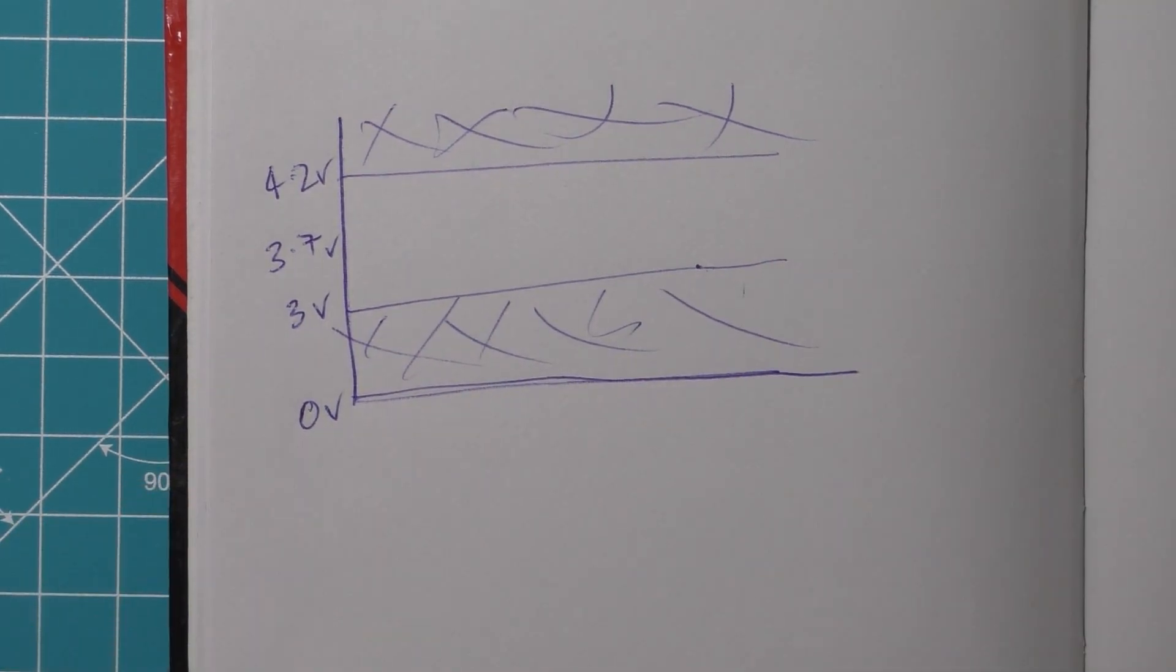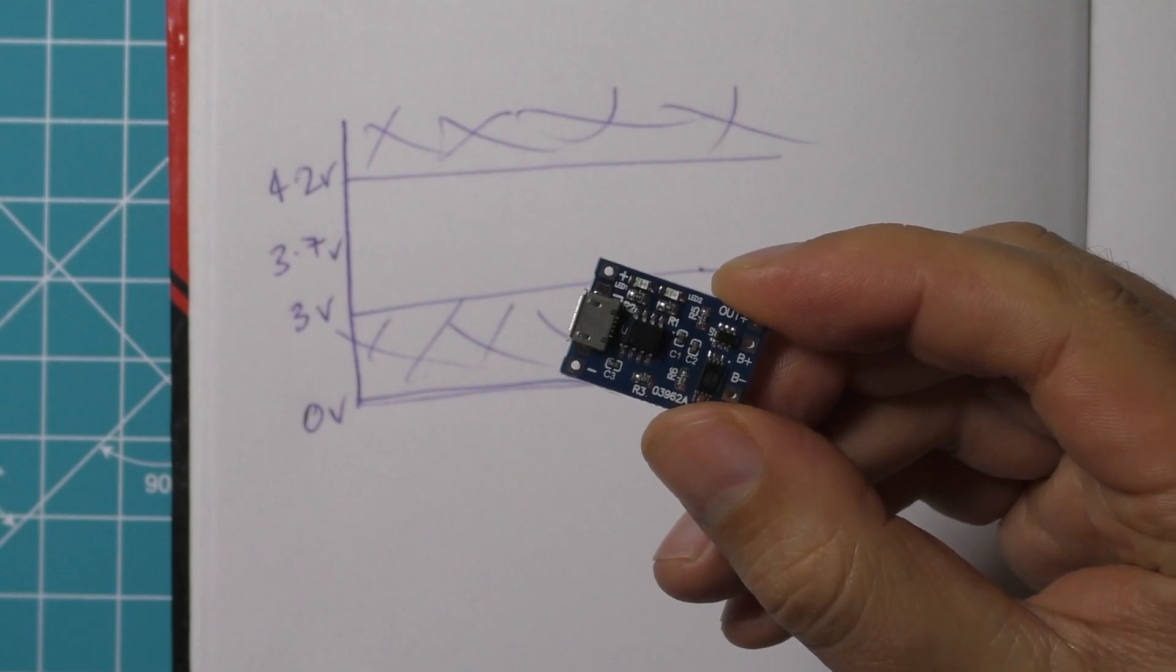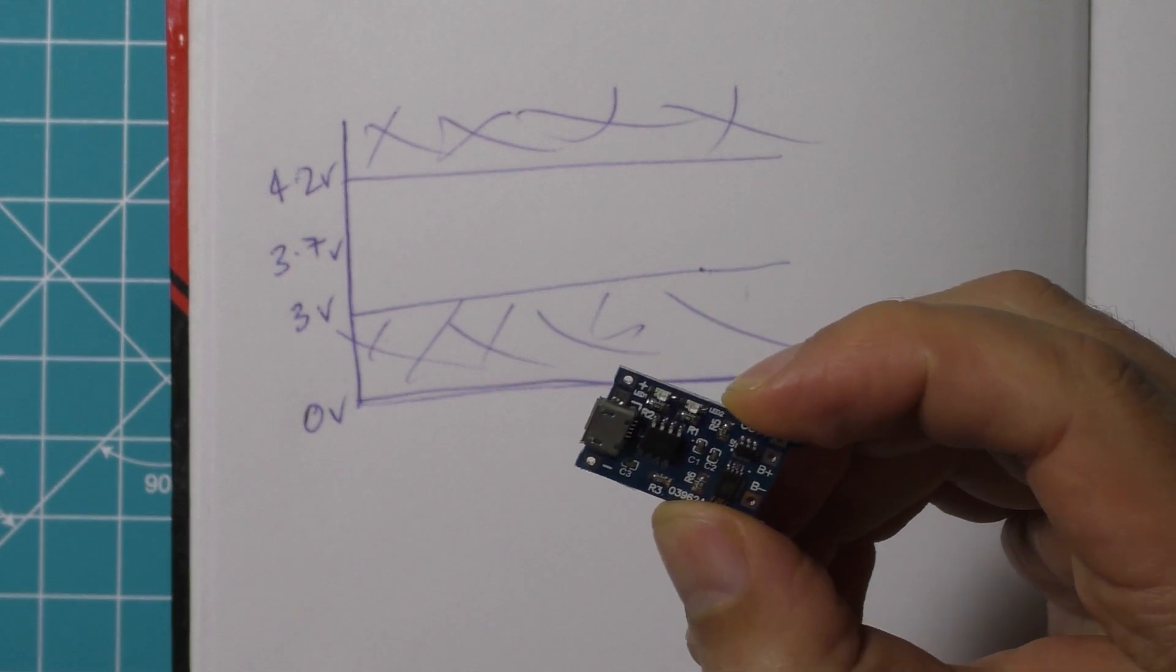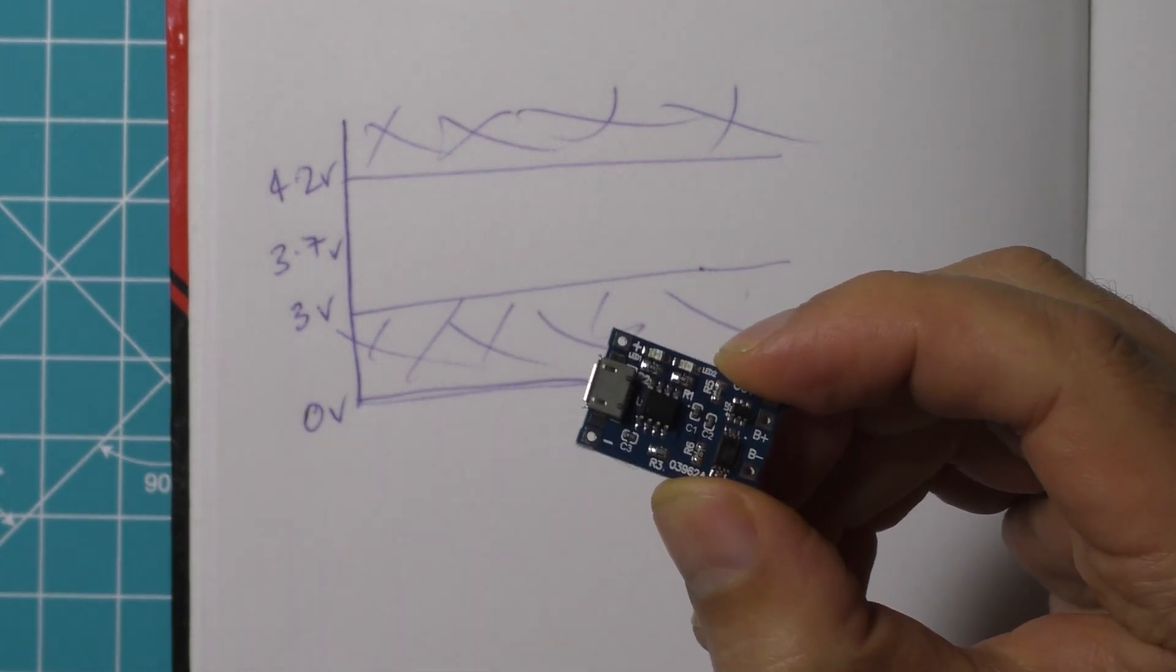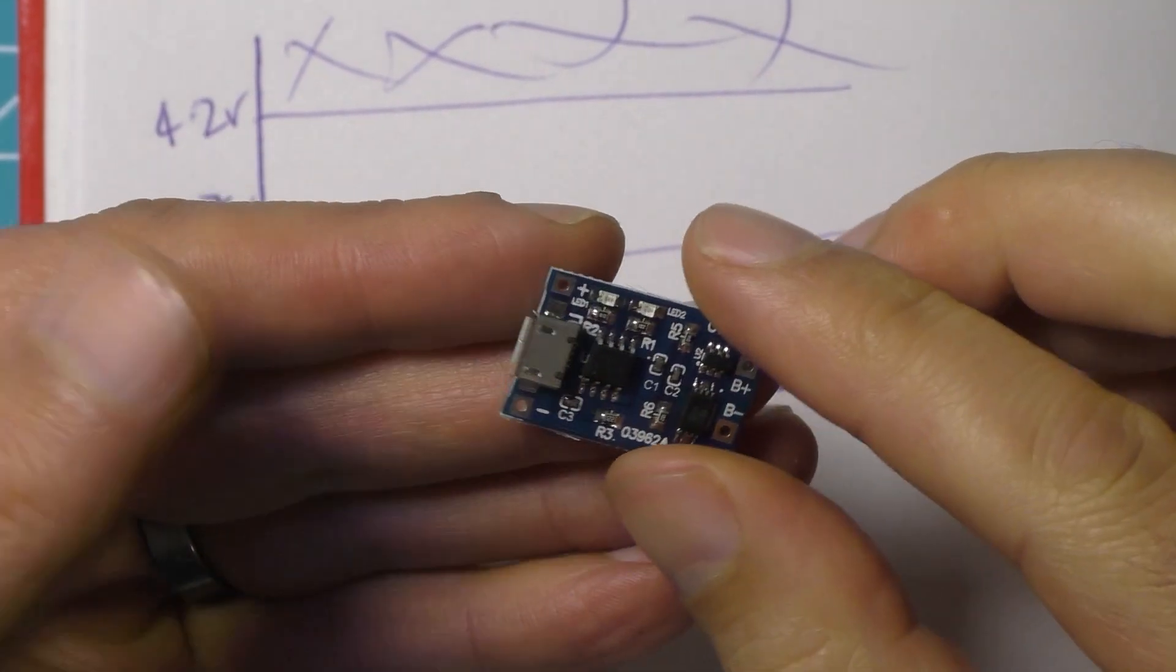So to take care of those requirements I'm using one of these. This is called a TP4056. It's a battery charging board. They're really cheap on eBay especially if you buy like a pack of 10. Shout out to Big Clive for the tip. So these are really simple to use.